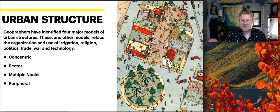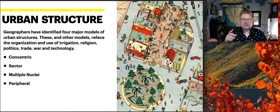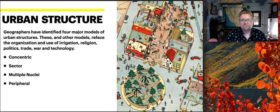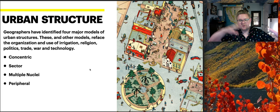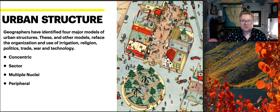Cities and landscapes are designed based on things such as the organization of water, religion, politics, trade, war, and technology. Every place adapts some form of these models. The photo provided is a drawing of early Olvera Street, where the plaza is the central part, surrounded by markets, fire departments, commerce, and churches. All these attributes are placed by design. The models I'll introduce are concentric, sector, multiple nuclei, and peripheral.